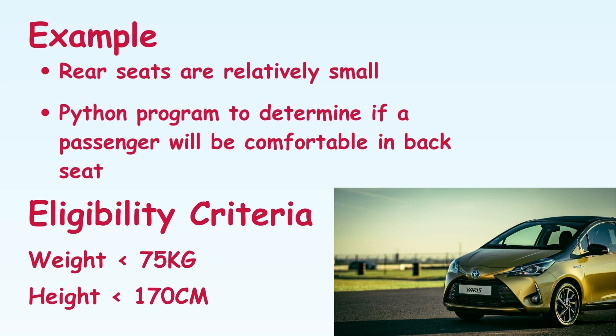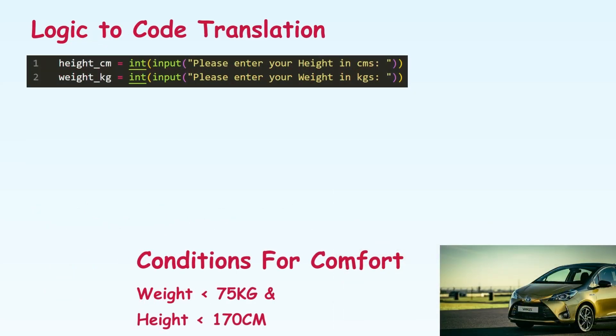So now let's translate this problem into a Python script. In the first line here we get the height of the person and in the second line we get the weight of the person. Simple and straightforward so far. Okay now comes the crucial part.